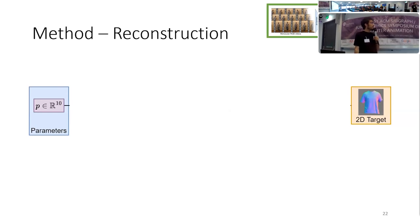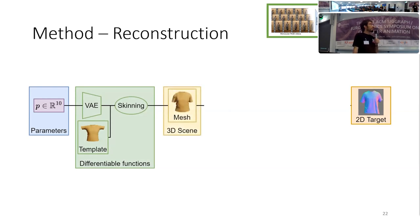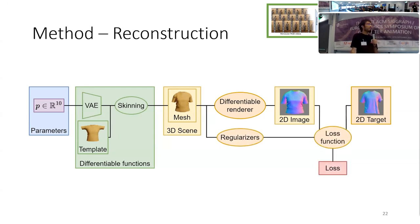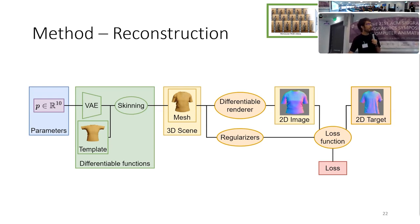Let's review the full reconstruction pipeline. We start with parameters that the optimizer will update. Using differentiable functions — a variational encoder and a scene function — we get the mesh. This mesh is input into the differentiable renderer and we obtain the 2D image of our optimized mesh. We compute regularizations and finally compute a loss function. Because the whole process is differentiable, a change in the loss can inform the parameters how they need to change so that the mesh matches the target.